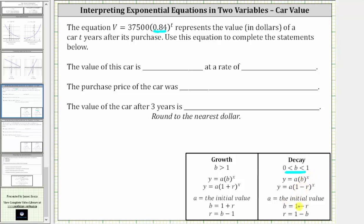If we set b equal to one minus r and then solve for r, we get r equals one minus b, which in our case, if r is equal to one minus b, we have r equals one minus 0.84, which gives us r equals 0.16, which as a percentage is 16%.